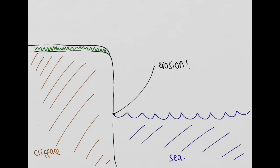Now this diagram is going to talk us through how a wave cut platform forms. So we've got our cliff face here, we've got vegetation that's developing on top of the cliff face, and we've got our sea here.